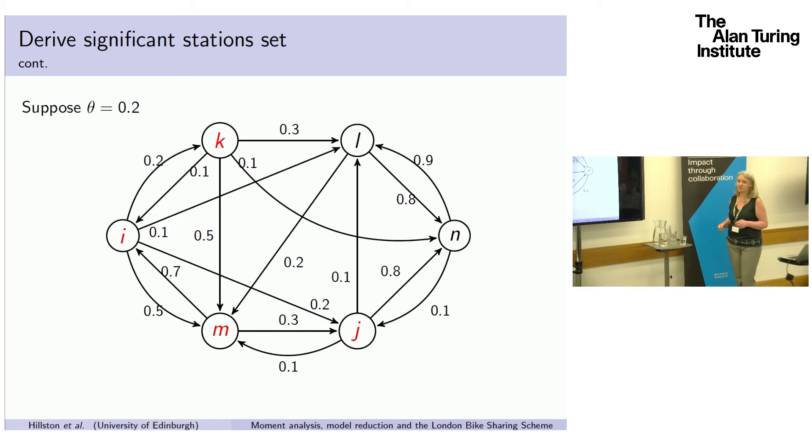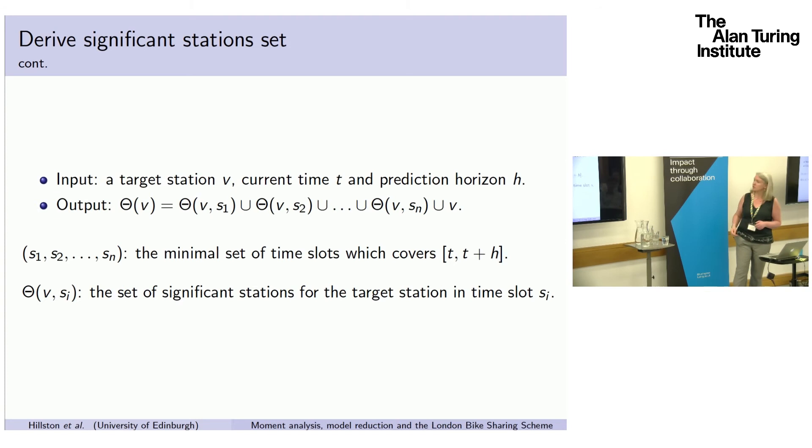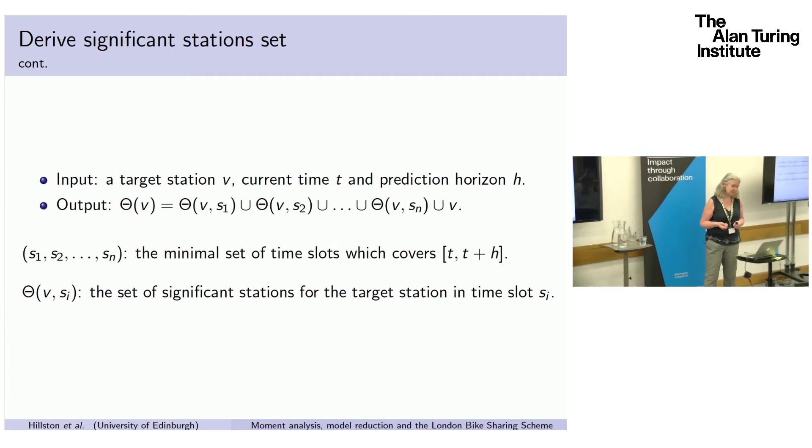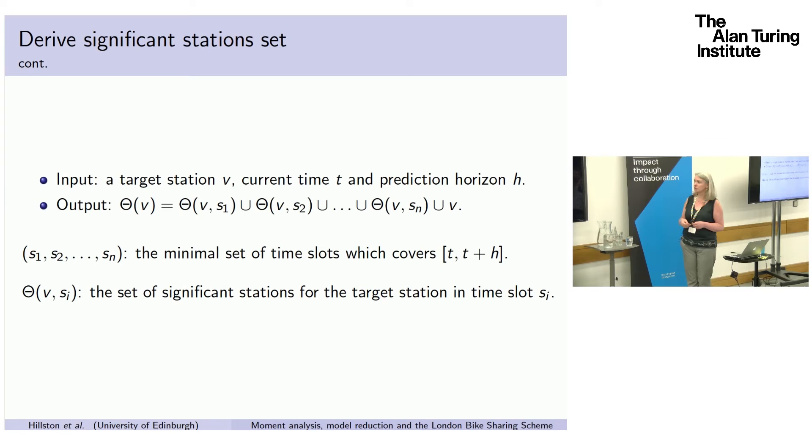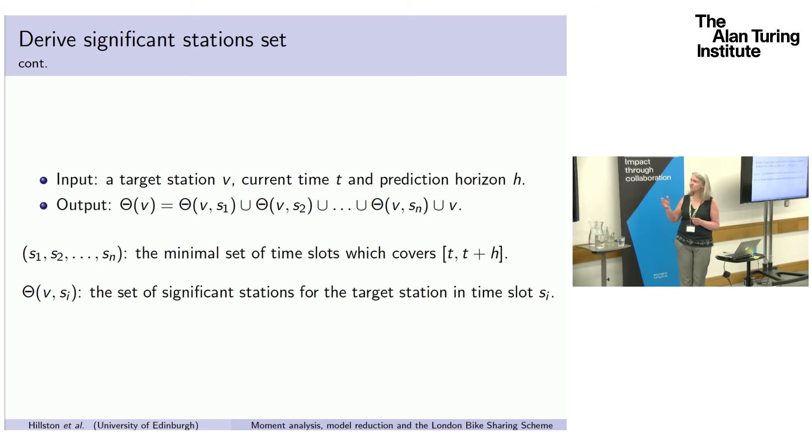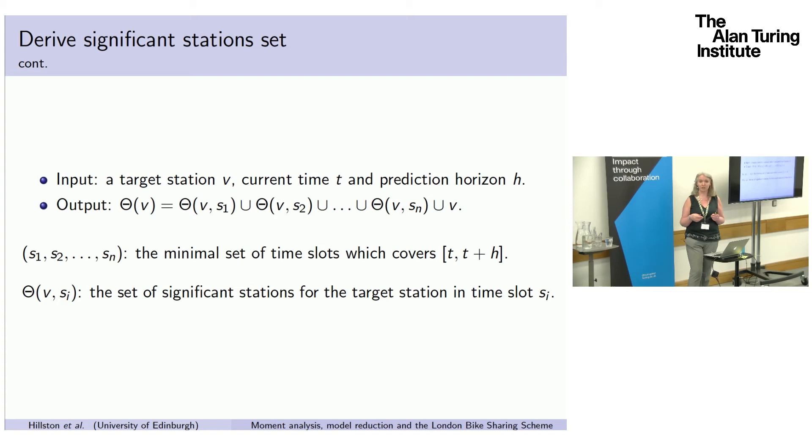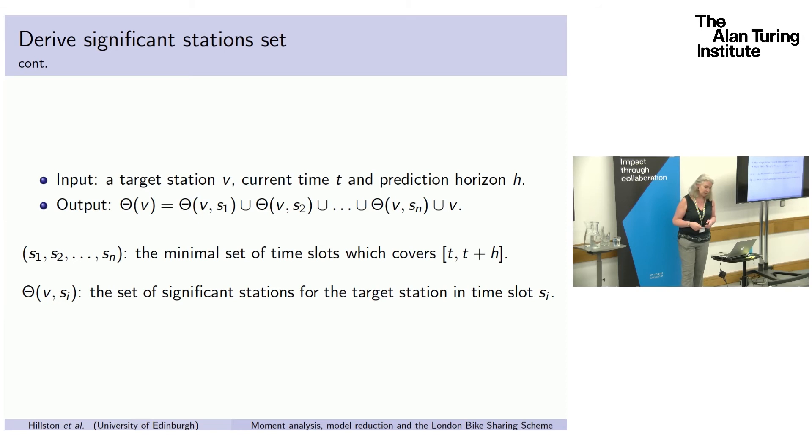When we have a particular query, we have a target station say v, we have the current time t and we have a prediction horizon h. So what we have to do is find the significant set of stations actually for each time slot because that may change. Because those flows change with time, the ones that are impacting on the particular station may change. So if we have a time horizon, our time slots are 20 minutes through the day. So if we have a time horizon of even 30 minutes, we're going to be involving two time slots. And so we might have different sets within those. Then we take the complete set of stations across those times.